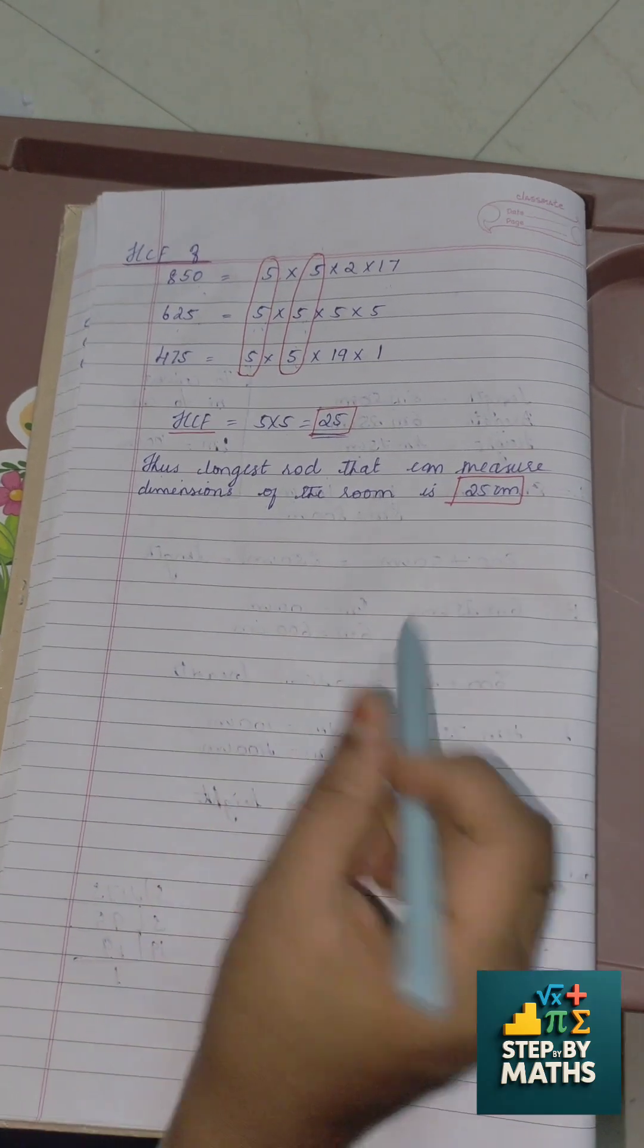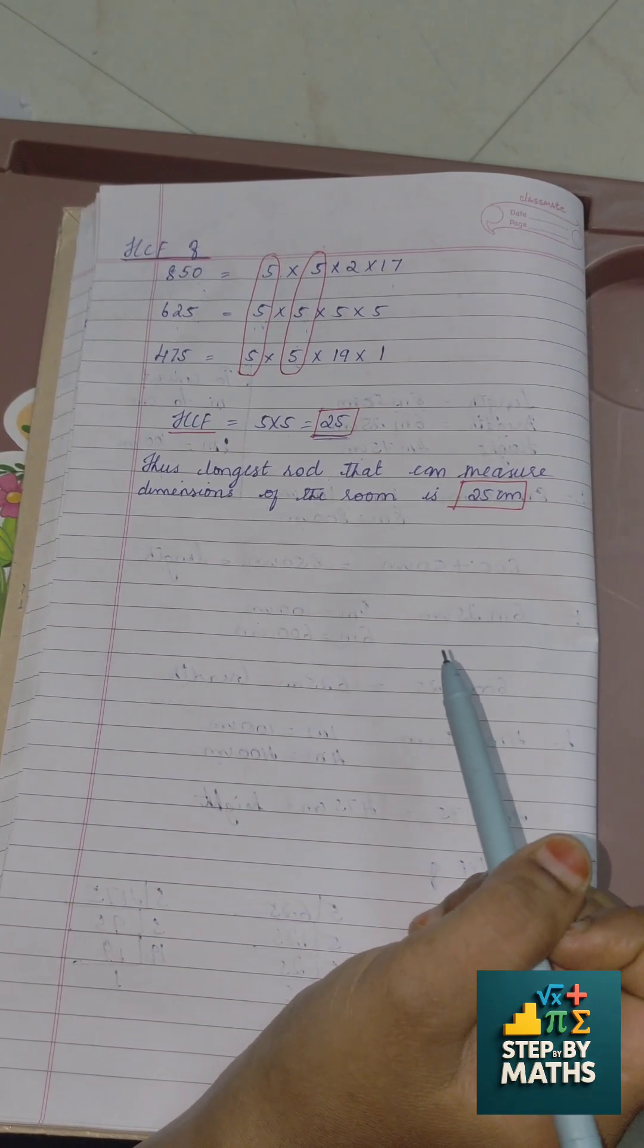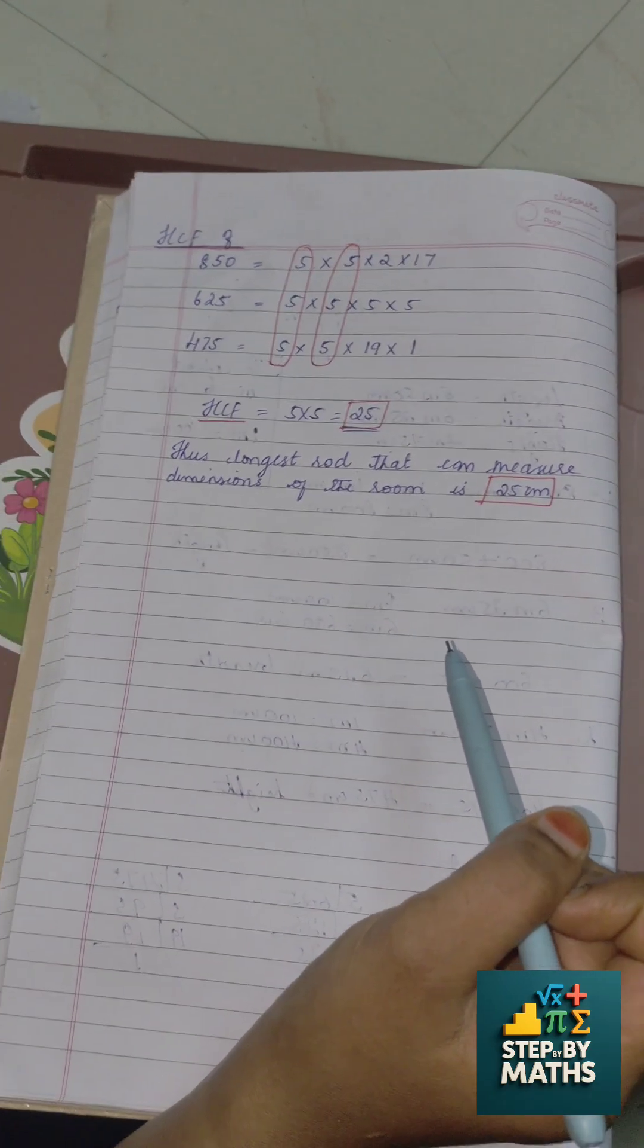Thus, the longest rod that can measure dimension of the room is 25 centimeter. Please subscribe, like, and comment my video. See you soon with a new solution.